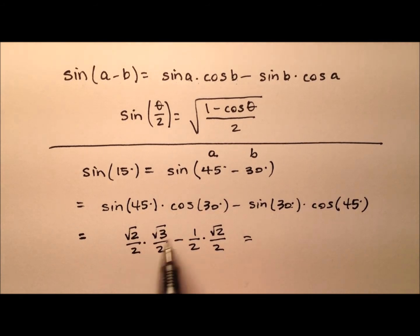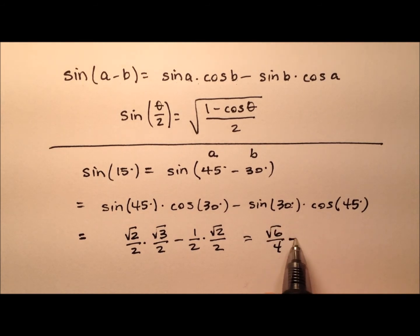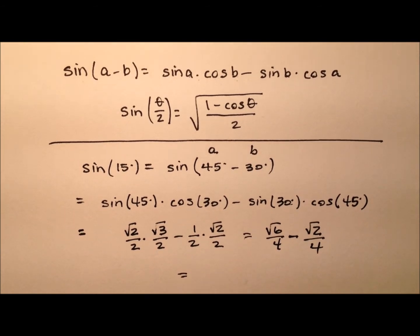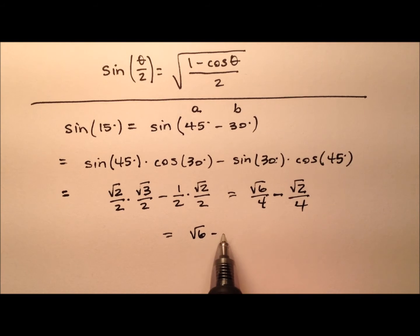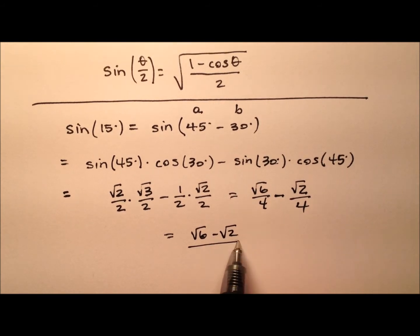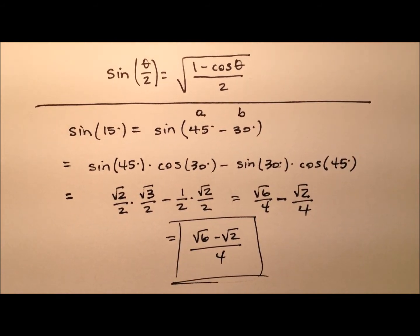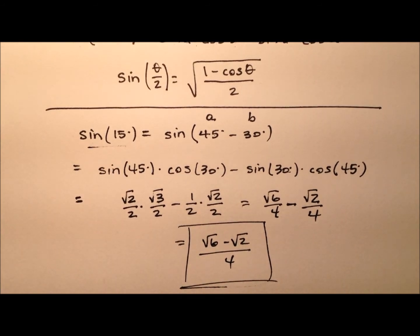Let's go ahead and multiply both of these products together. So we have √6/4 minus √2/4. And we can put that over a single common denominator and say it's (√6 − √2) all over 4. And that's going to be the exact value for the sine of 15.